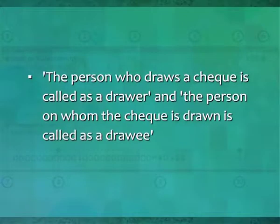The cheque became a negotiable instrument and was included in the Negotiable Instruments Act 1881. Section 6 of this act defines the cheque as: a cheque is a bill of exchange drawn on a specified banker and is expressed to be payable only on demand. The person who draws a cheque is called the drawer, and the person on whom the cheque is drawn is called the drawee. In modern days, cheques are provided in specified formats.